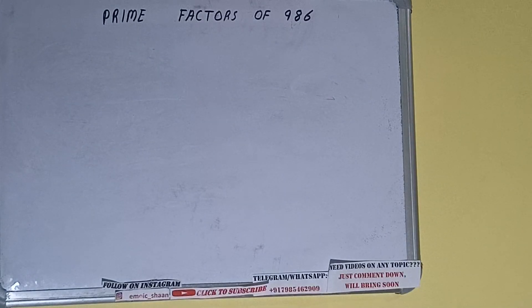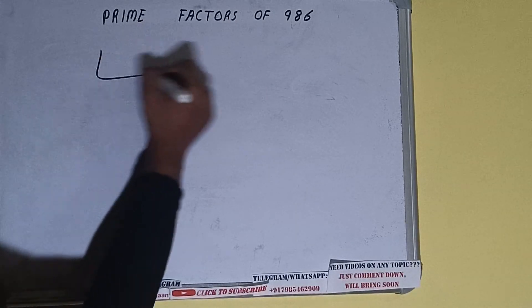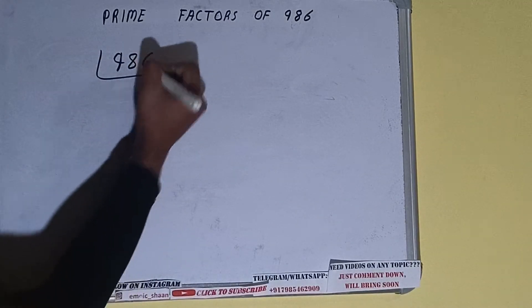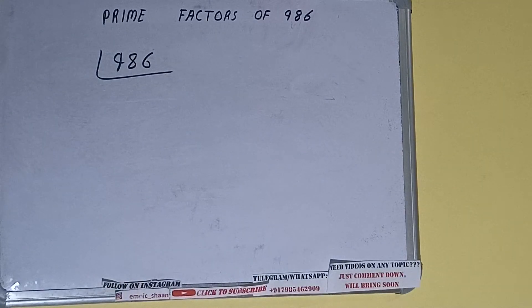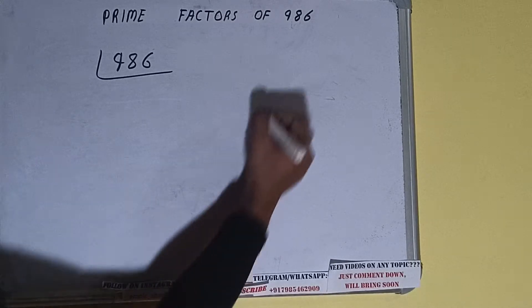Hello friends, in this video I'll be helping with the prime factors of the number 986. So let's start. First of all, we need to write the number like this. The next thing we need to know about is what are prime numbers. So prime numbers are numbers that are divisible by one and the number itself, like two, three, five, seven, and so on.